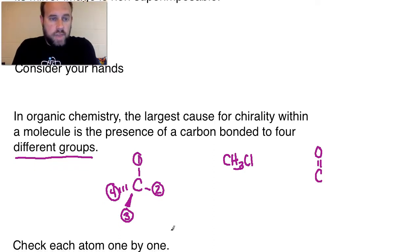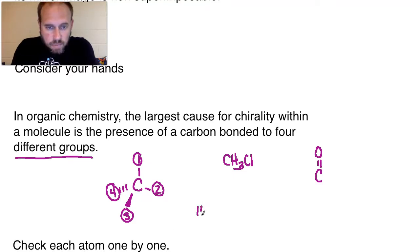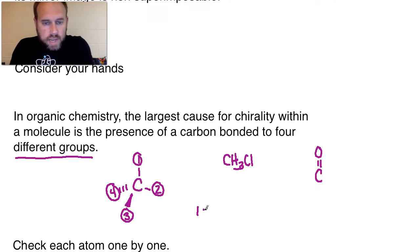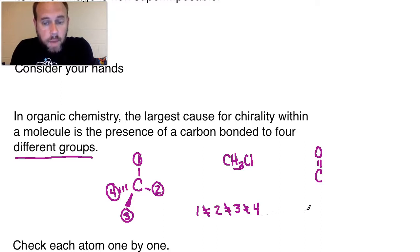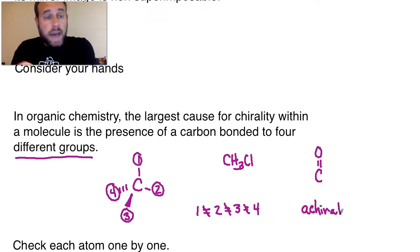All four groups need to be different. Whatever group one is cannot equal two, which cannot equal three, which cannot equal four — they all have to have their own unique identity. If any two groups equal one another, then it becomes what we call achiral. Achiral simply means something that is not chiral.